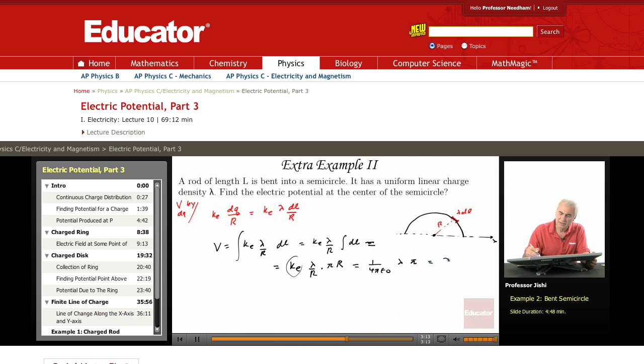So just lambda over 4 epsilon 0. This is the electric potential produced by the rod of length l bent into a semicircle.